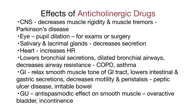On the GI system, anticholinergic drugs relax the smooth muscle tone of the GI tract, decrease intestinal and gastric secretions, and decrease motility and peristalsis. They are used for peptic ulcer disease and irritable bowel. On the GU system, they have an antispasmodic effect on smooth muscle and are used for overactive bladder and incontinence.